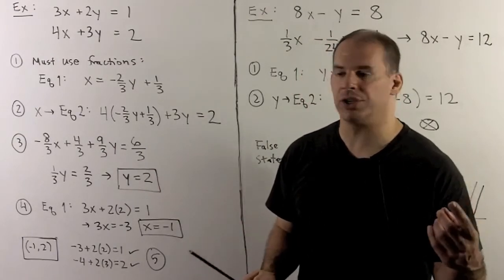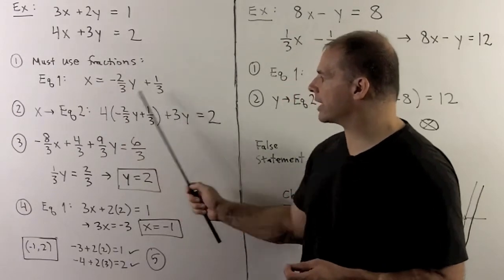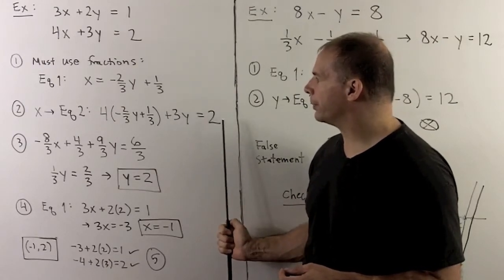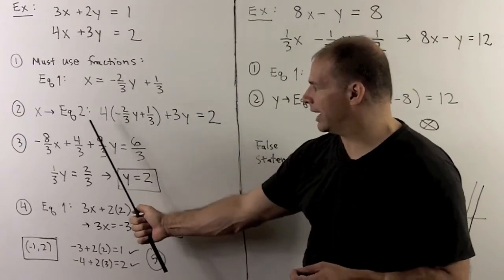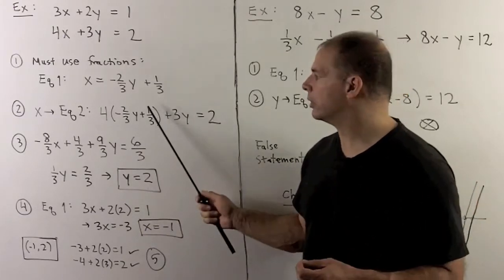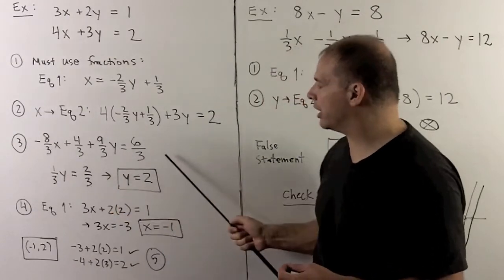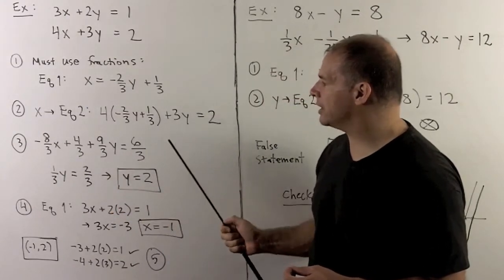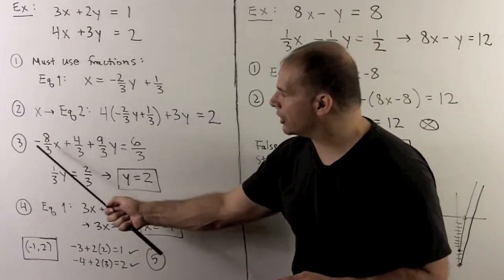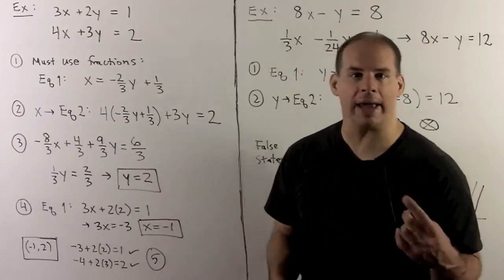Substitute x into equation 2. So, I'll have 4(-2/3 y + 1/3) + 3y = 2. Note here, we've eliminated x completely from the equation. So, I can solve for y. We distribute the 4. We're solving this equation here. Turn 3y into 9y/3. Change the 2 into 6/3. So, now, I just do the arithmetic. I have 1/3 y = 2/3. We get y = 2.